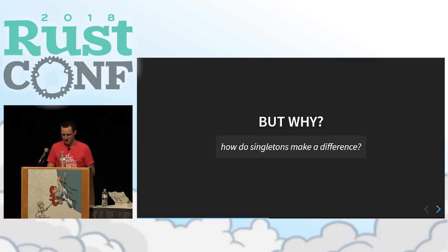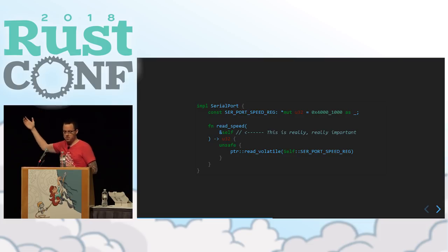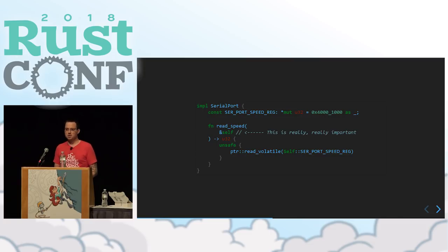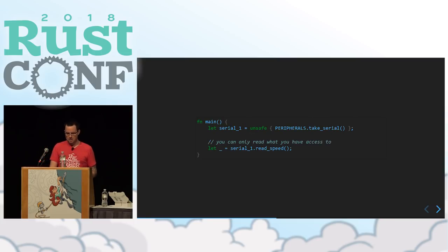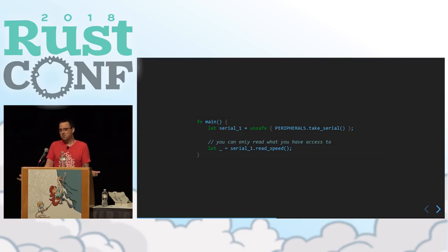So why is the singleton useful? The most important part is that reference to self. When you have these structures and you're required to have a reference to self to use them, and there's only one place you can get that structure, it forces you to pass ownership and borrowing around. You have to take the serial port, and before you can ever read the speed of that peripheral, you had to have gotten it from somewhere. If Rust is tracking where it's going and coming from, you can't use it unless you've made the borrow checker happy.